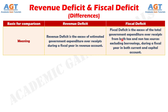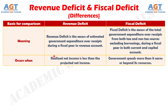Number 2: Revenue deficit takes place when the realized net income of the government is less than the estimated net income, whereas fiscal deficit arises when the spending of the government is more than its earning or beyond its financial inflow or resources.